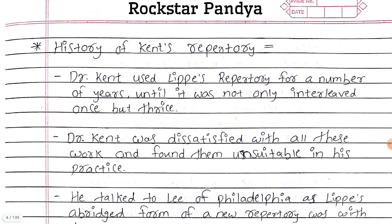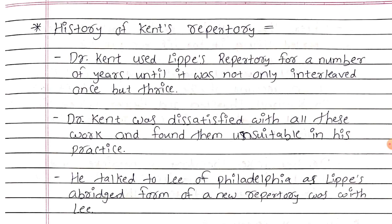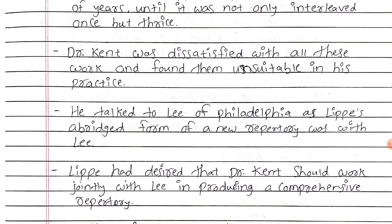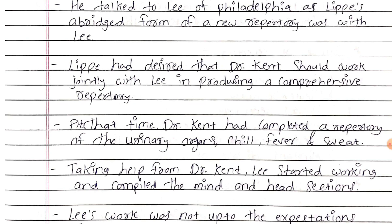History: Dr. Kent used Lippi's repertory for a number of years until it was revised not once but thrice. Dr. Kent was dissatisfied with all these works and found them unsuitable in his practice. He talked to Lee of Philadelphia as Lippi's abridged form of a new repertory was with Lee. Lippi had desired that Dr. Kent should work jointly with Lee in producing a comprehensive repertory.